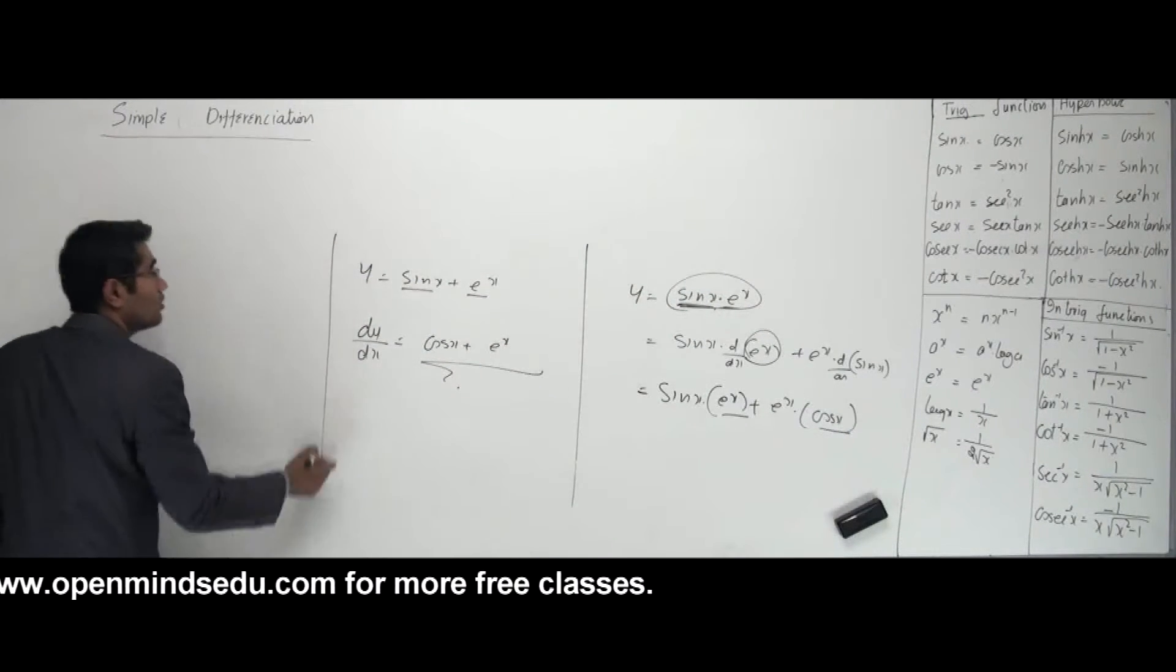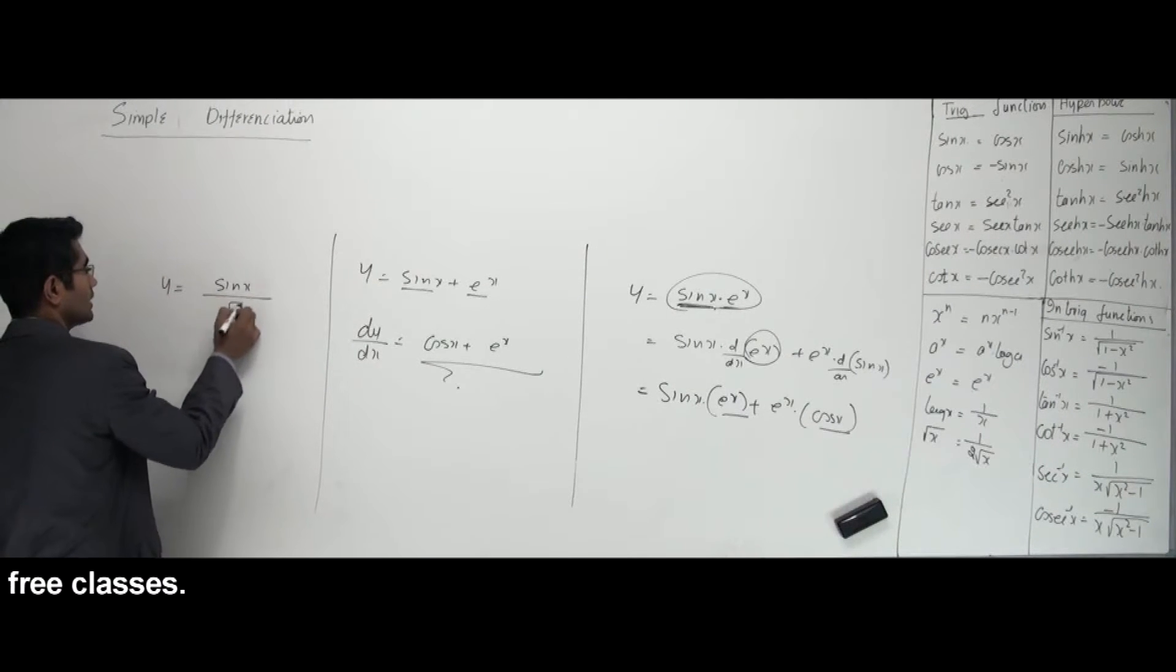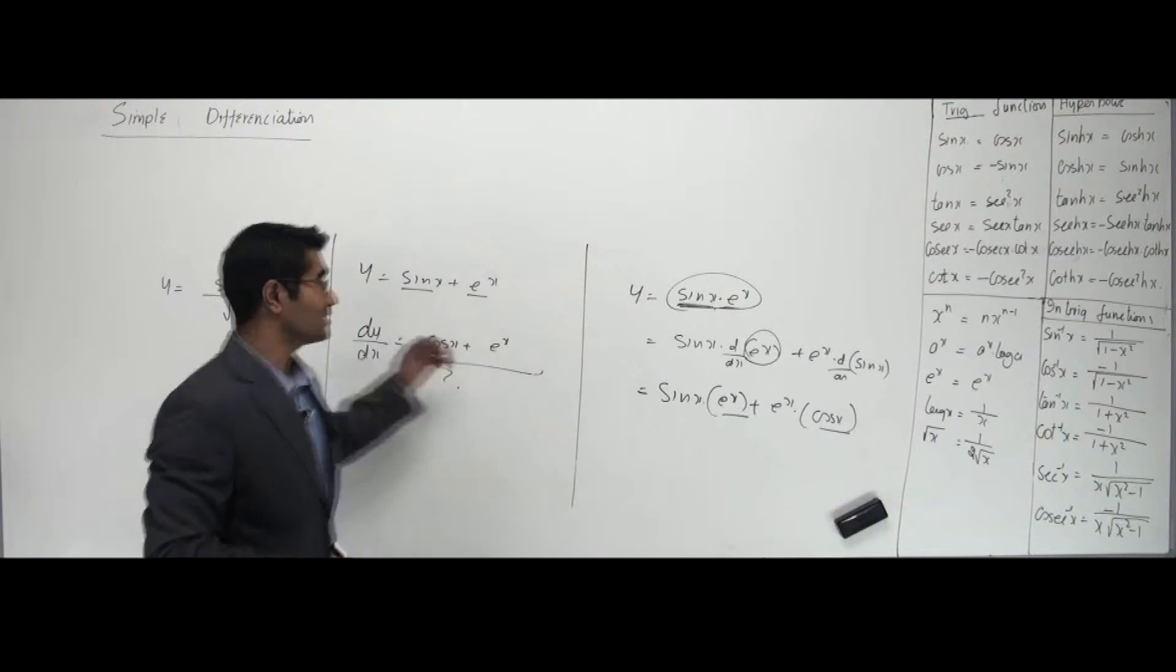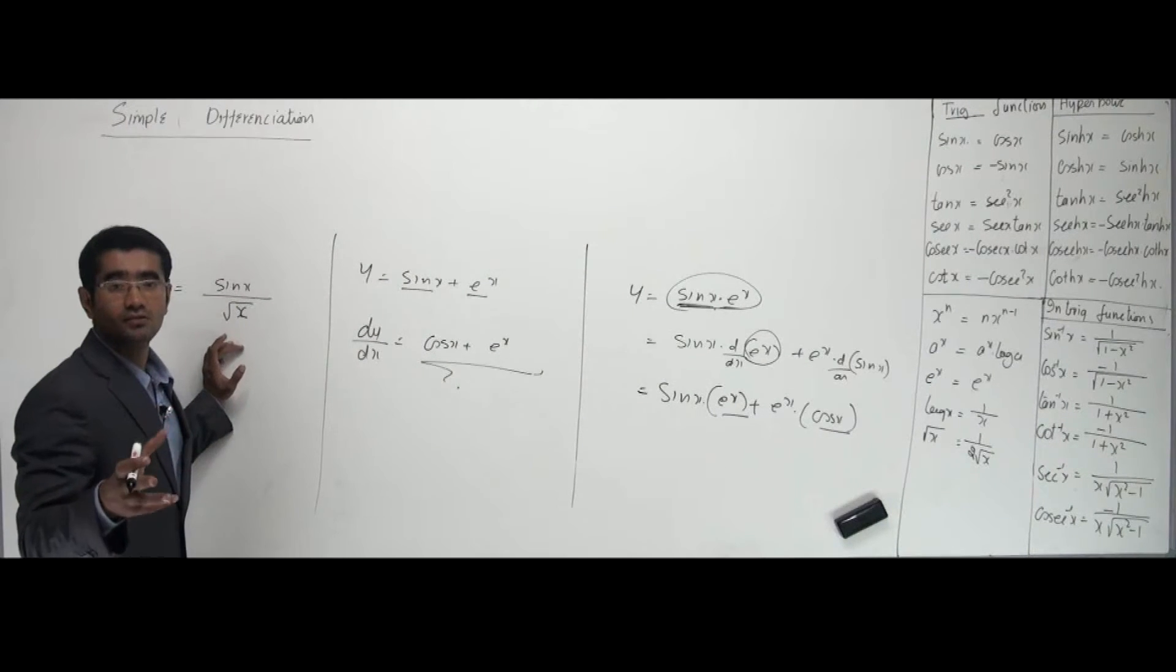You have y is equal to let's say sin x divided by root x. Now they are two functions but they are coming in a different fashion. They are coming together next to each other. These guys are coming by one above the other. Now. Can I belt them the same way? No. The belting rule is a little different. It's called as quotient rule here.